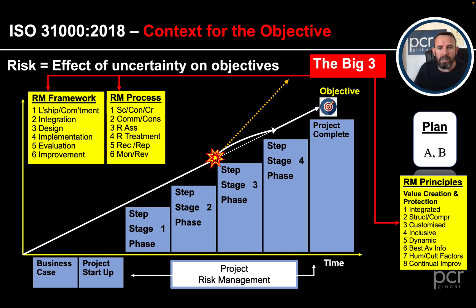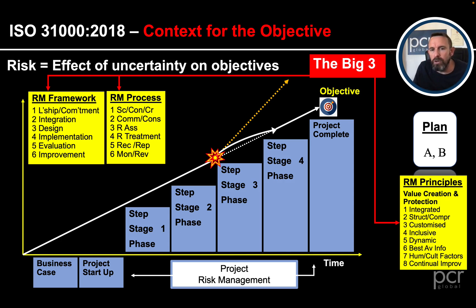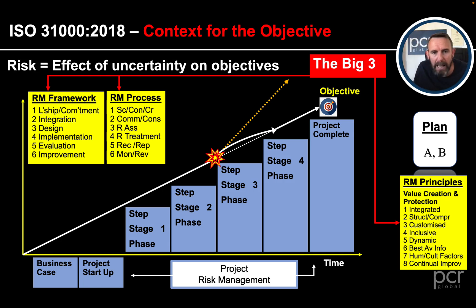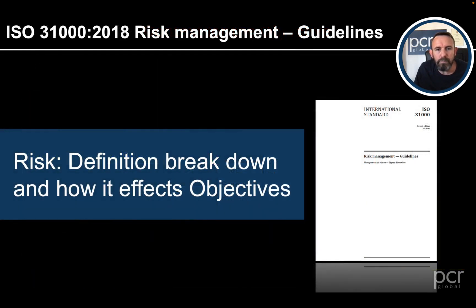If we apply risk management, we should get back on our trajectory to reach our objectives. That last movement on the screen shows that. The big three are both inward and outward looking, and they encapsulate any projects we have — in this case project risk management. So that's it — risk: the definition breakdown and how it affects objectives. Thanks for watching.